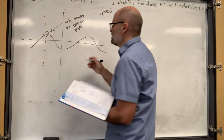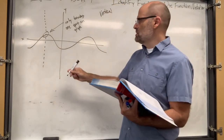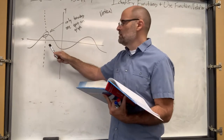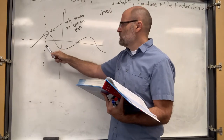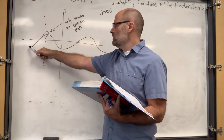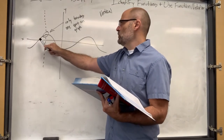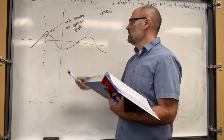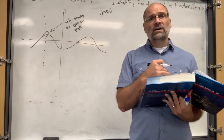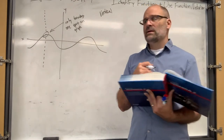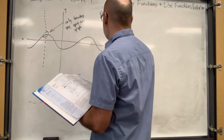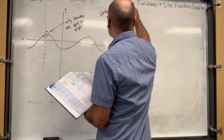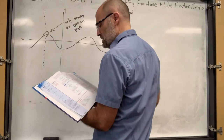If you look at the x and y values - negative 5 goes to negative 1, negative 4 goes to 0, negative 3 goes to 1 - it's only going to one y value. That makes sense. That is the vertical line test. When you see that in your homework, that's what it is.